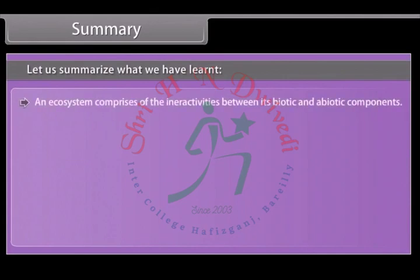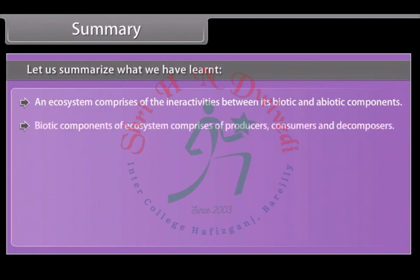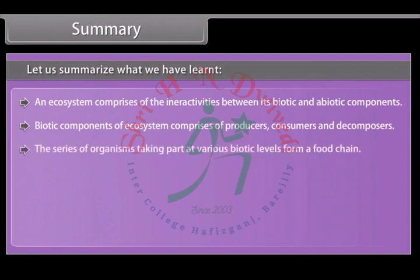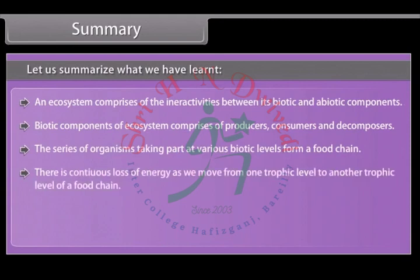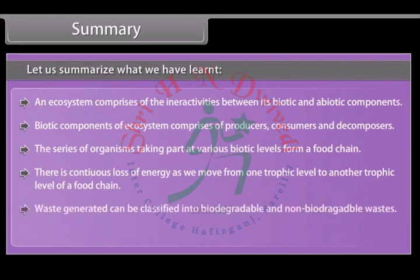An ecosystem comprises the interactions between its biotic and abiotic components. Biotic components of an ecosystem comprise producers, consumers, and decomposers. The series of organisms taking part at various biotic levels form a food chain, and there is continuous loss of energy as we move from one trophic level to another. Waste generated can be classified into biodegradable and non-biodegradable wastes.